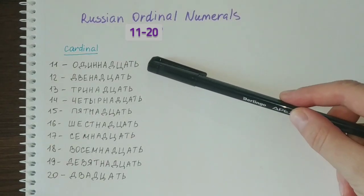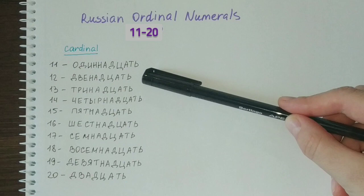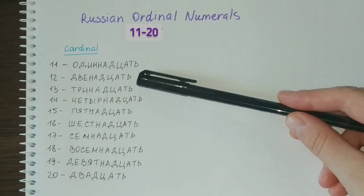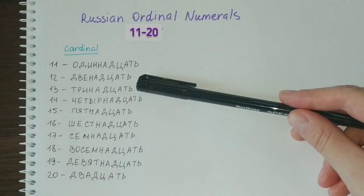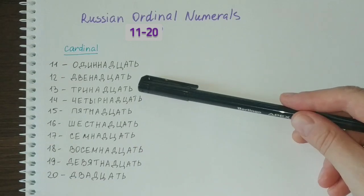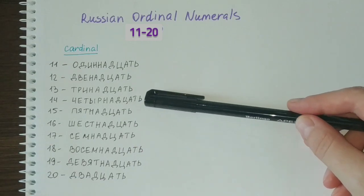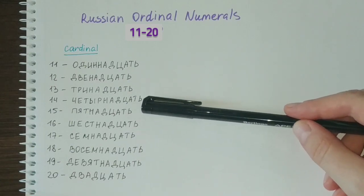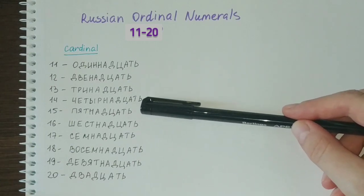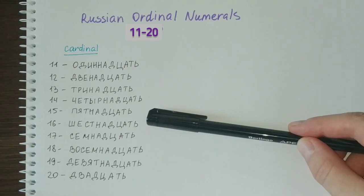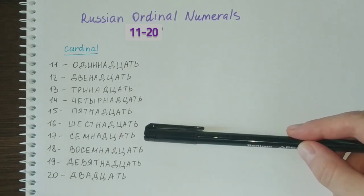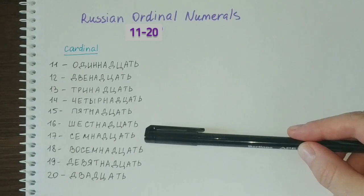So 11 is одиннадцать, 12 is двенадцать, 13 is тринадцать, 14 is четырнадцать, 15 is пятнадцать, 16 is шестнадцать, 17 is семнадцать.